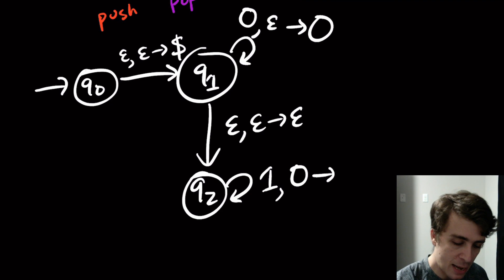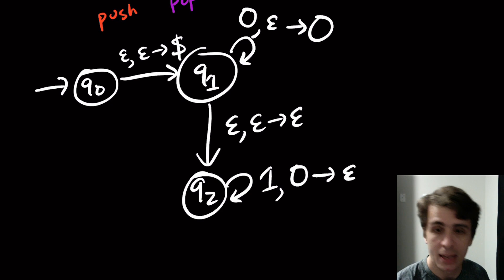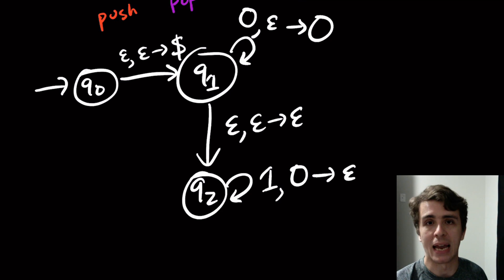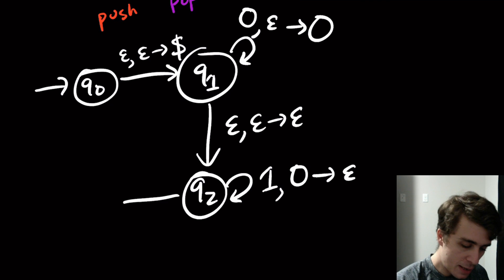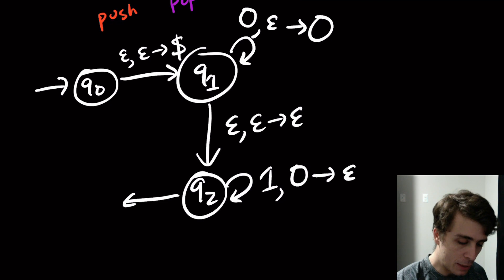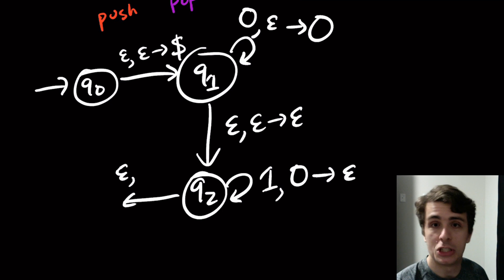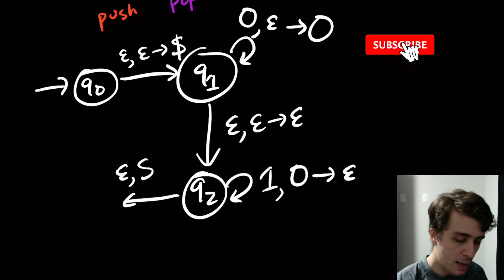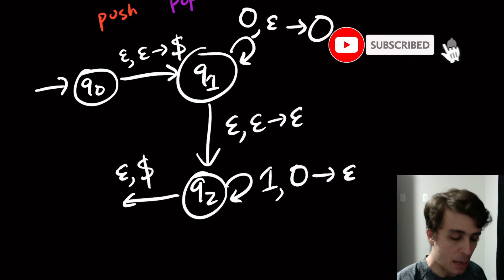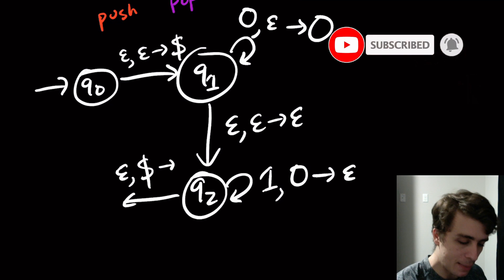I better not push anything on this self-loop, because pushing would just undo the work I just did. Sometimes popping and pushing the same thing back on is useful, but not here. So the push is epsilon — we push nothing at all.